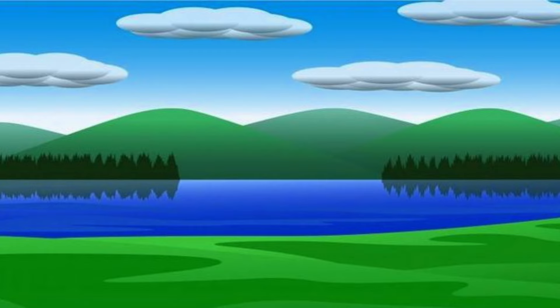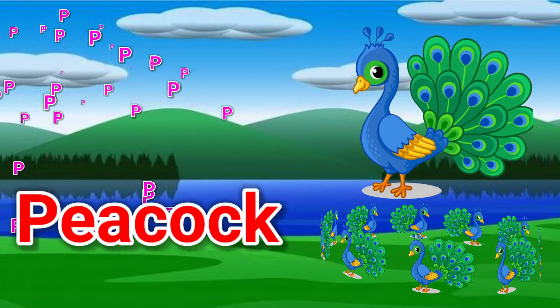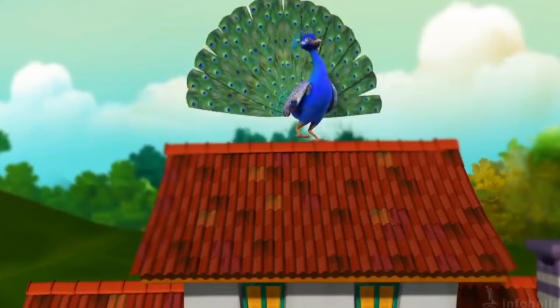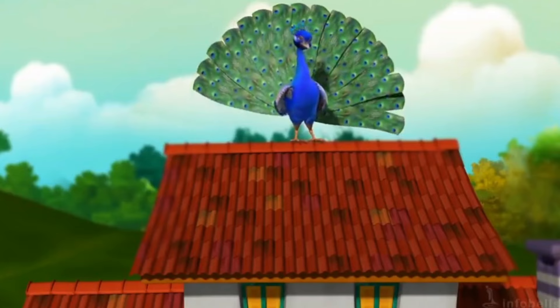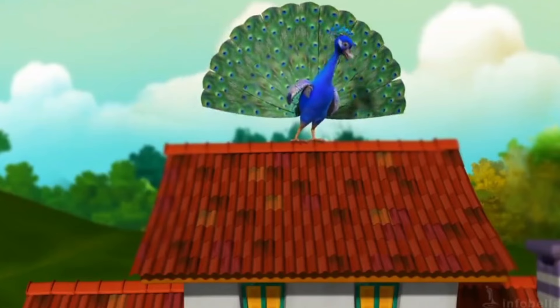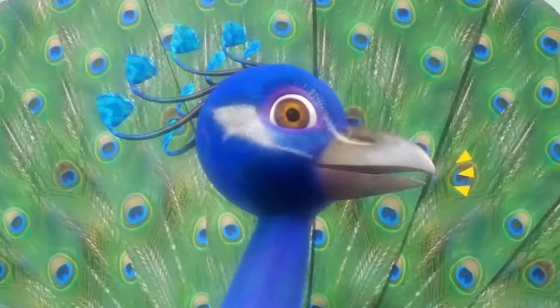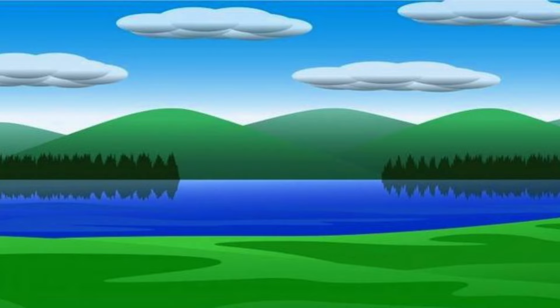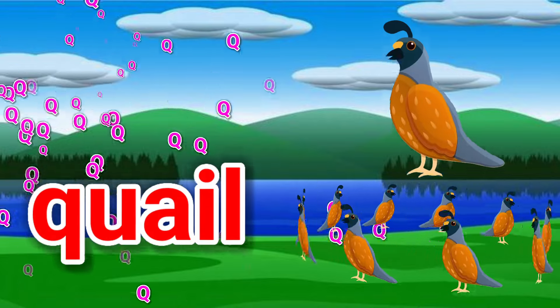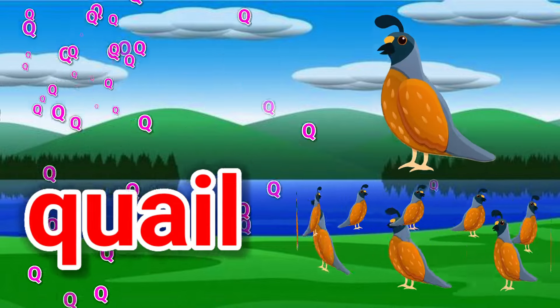N is for nest. P is for peacock. Q is for quail.